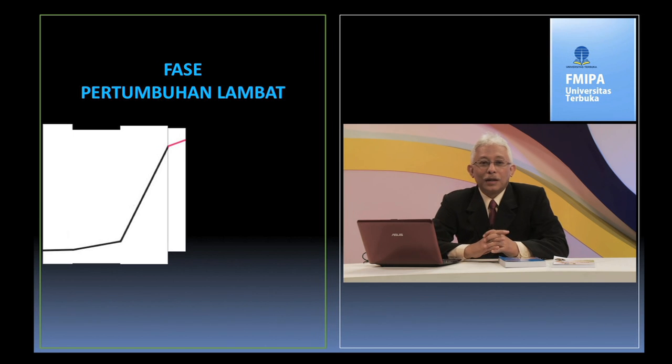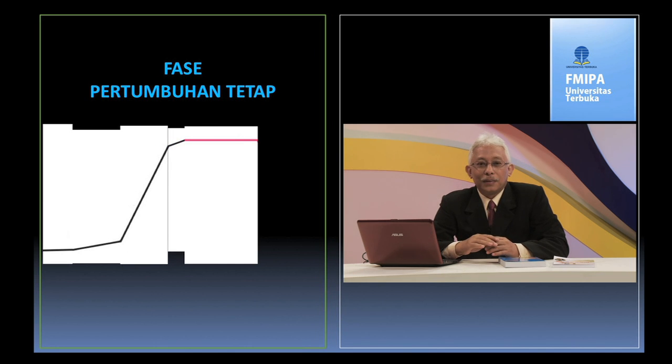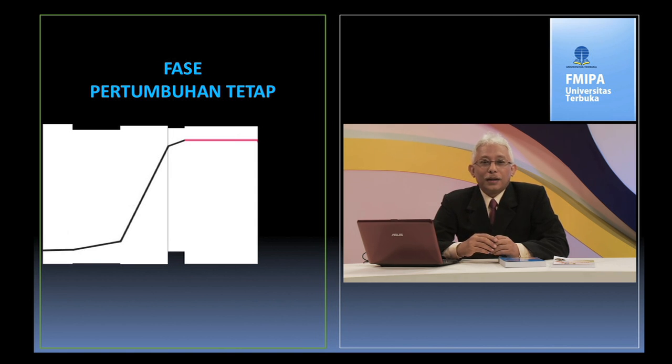Setelah mengalami fase pertumbuhan lambat, jumlah populasi sel mikroorganisme menjadi tetap. Hal ini disebabkan jumlah sel yang tumbuh sama dengan jumlah sel yang mati. Ukuran sel pada fase ini pada umumnya menjadi lebih kecil, karena sel tetap membelah meskipun zat nutrisi sudah mulai habis. Karena kekurangan zat nutrisi, sel kemungkinan mempunyai komposisi berbeda dengan sel yang tumbuh pada fase logaritmik. Pada fase ini, sel-sel menjadi lebih tahan terhadap keadaan yang ekstrim, seperti panas, dingin, radiasi, dan bahan kimia.